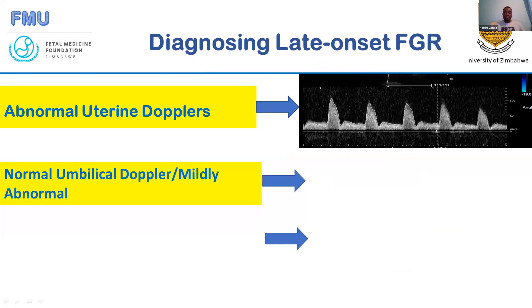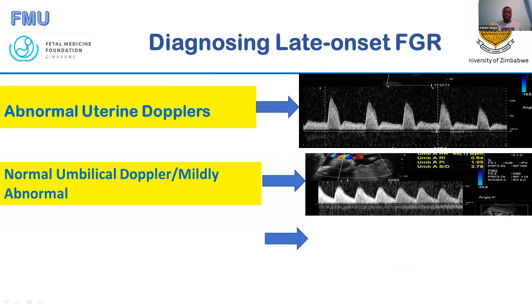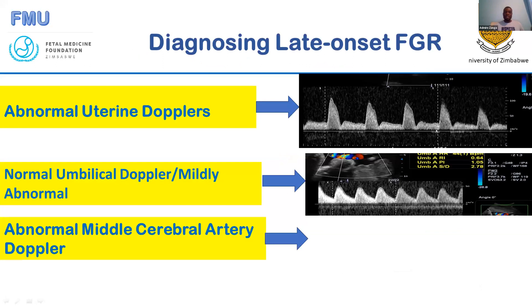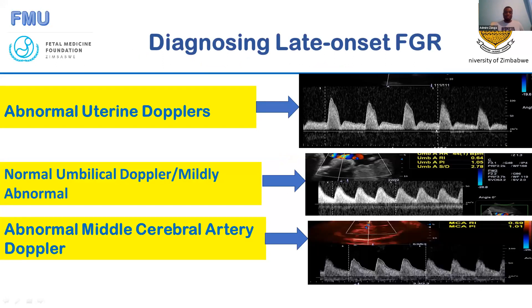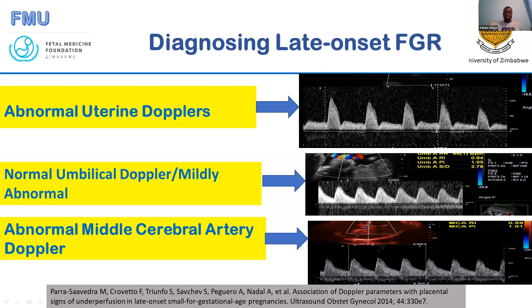Late onset FGR can also manifest through high uterine artery Dopplers. The umbilical arteries can be normal or mildly abnormal, but the MCA usually will show redistribution, because the MCA is an indicator of the oxygen situation. If the fetus is not happy, it will show a decreased pulsatility index — a low PI.